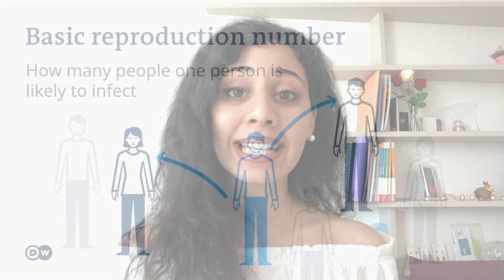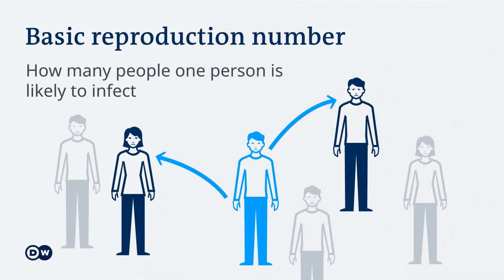Let's move on to the so-called reproductive number, or R0. It indicates how contagious an infectious disease is. R0 tells you the average number of people who will contract a contagious disease from one person with that disease. The current estimate for COVID-19 is 2 to 2.7.